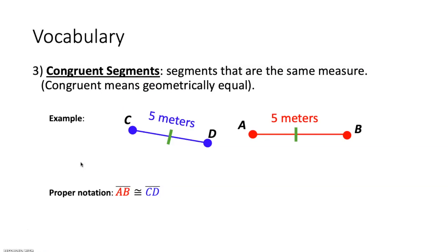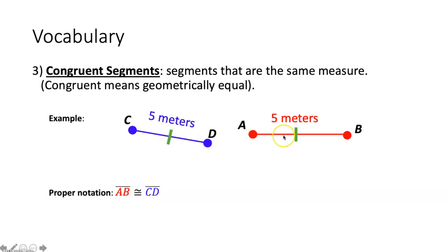The next vocabulary term is congruent segments — segments that have the same measure are considered congruent. Being congruent just means they're geometrically equal; they have the same measure. So instead of writing an equal sign, if we have segment AB and segment CD, we write that they are congruent to one another using an equal sign with a little tilde over it. Also note these green tick marks — anytime you see tick marks, that tells you those two figures are congruent. Tick marks mean congruent.